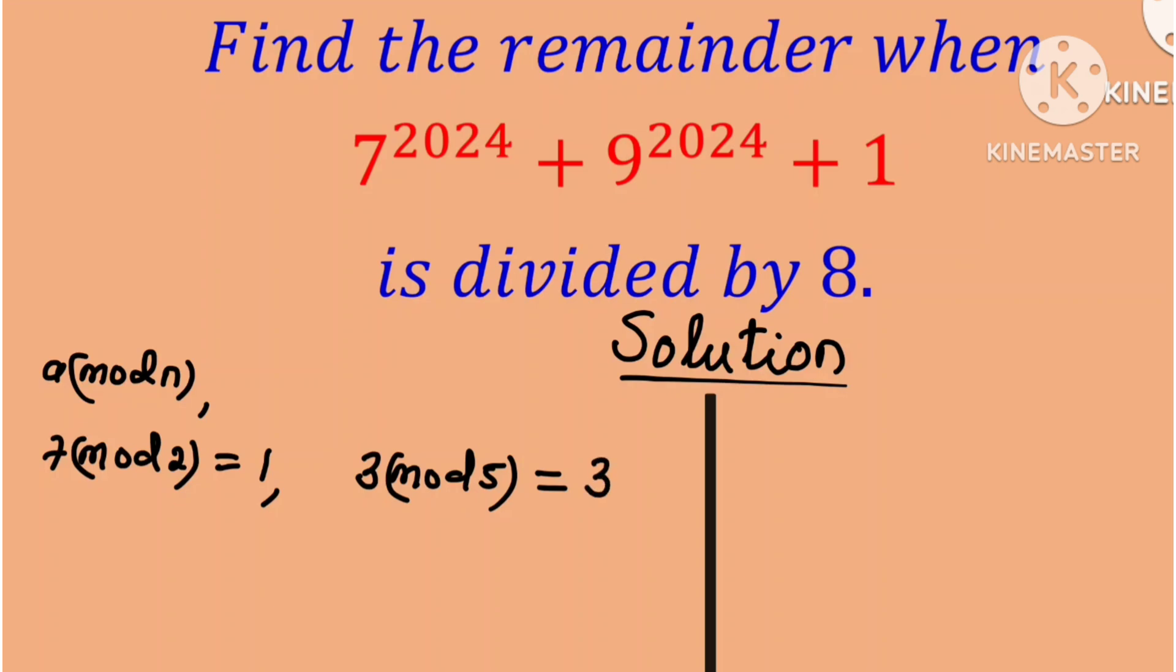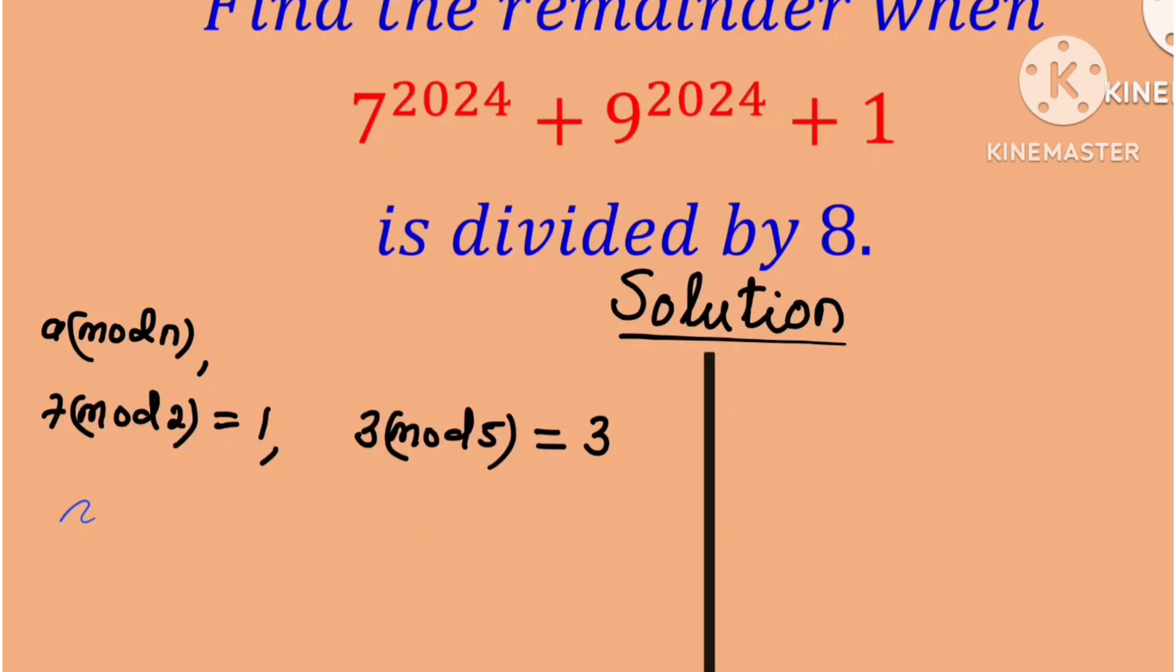And so the remainder obtained when this number is divided by 8 can be written as 7 raised to the power 2024 mod 8 plus 9 raised to the power 2024 mod 8 plus 1 mod 8.